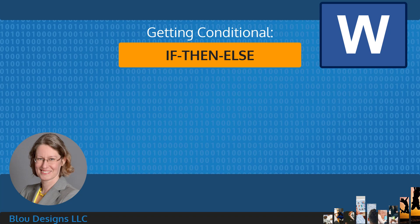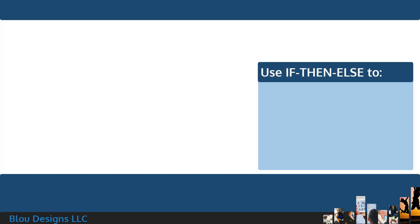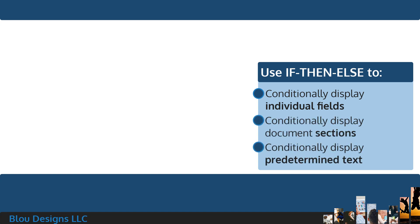If you're talking about skipping over entire responses or records that meet certain criteria, you're talking about something called a skip if, and we'll cover that in a later lesson. But if you're talking about using values in your data to conditionally display fields, entire sections of a document, or some predetermined text, you're talking about an if-then-else situation.